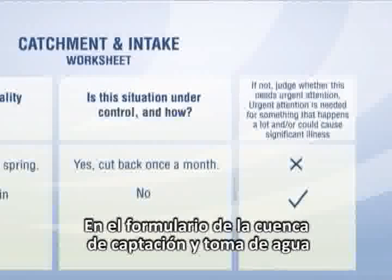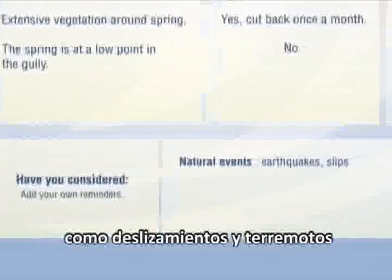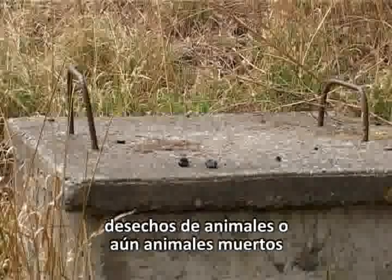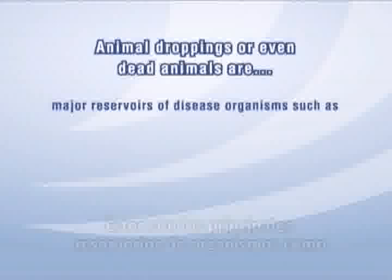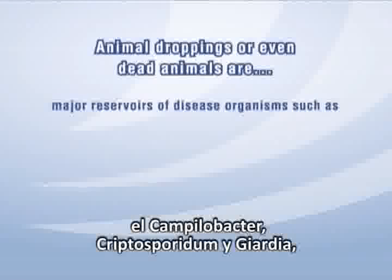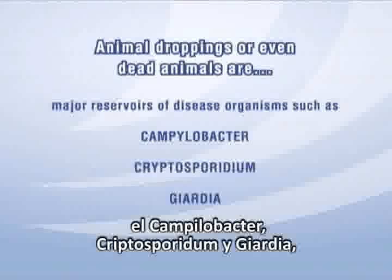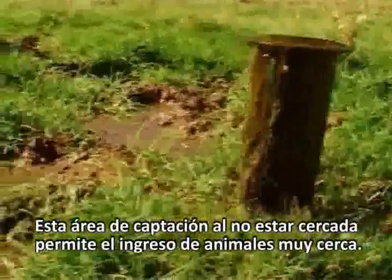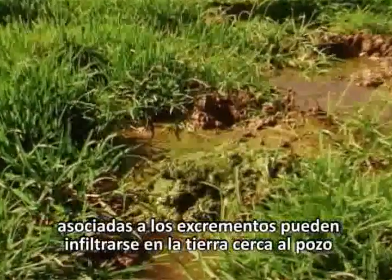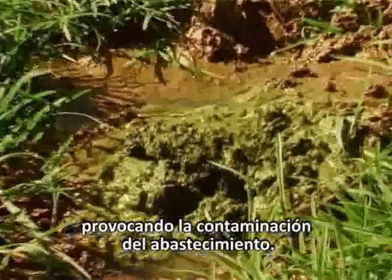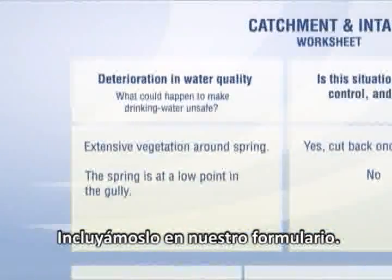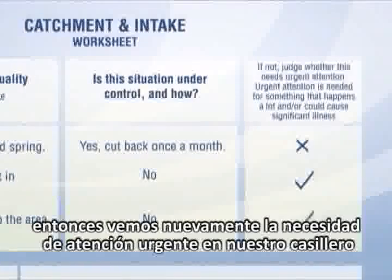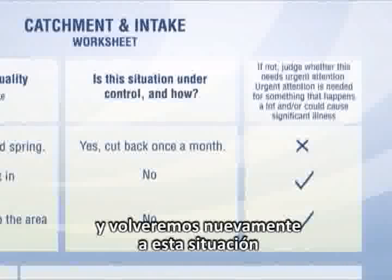In the catchment and intake worksheet, you also need to consider such issues as natural events, such as slips and earthquakes. How about farming practices? Animal droppings, or even dead animals, are a major issue when close to a water intake. These are major reservoirs of disease organisms, such as Campylobacter, Cryptosporidium, and Giardia. Here we can see cow droppings next to an open well — this catchment area is not fenced off, allowing animals to get too close. Disease-causing organisms from the droppings can be flushed into the ground near the well, causing contamination. Let's add this to our worksheet: stock have direct access to the area close to the well. This issue is not under control, so we again tick the needs urgent attention box, and we will come back to this in our plan to manage the system.